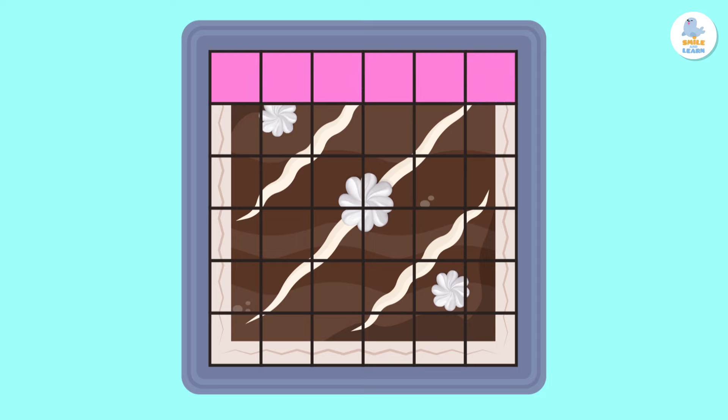The horizontal side of our cake has 1, 2, 3, 4, 5, 6 columns. And the vertical side has 1, 2, 3, 4, 5, 6 rows. Great work, friends!